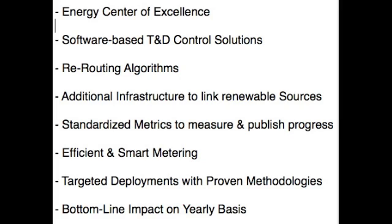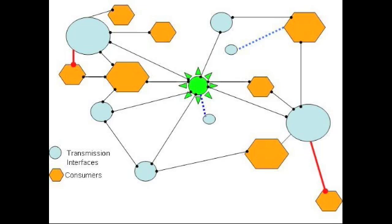Then, apply rerouting algorithms on existing transmission infrastructure. Metrics should be published on how these rerouting procedures can save costs on a near-term basis. Next, provide additional infrastructure to link renewable sources, i.e. wind, solar, nuclear, biomass, to the existing transmission grid.